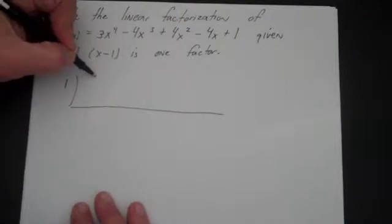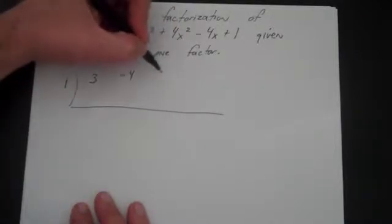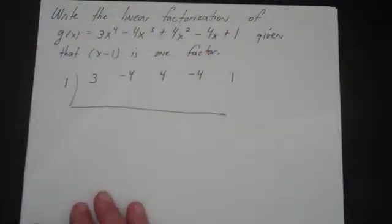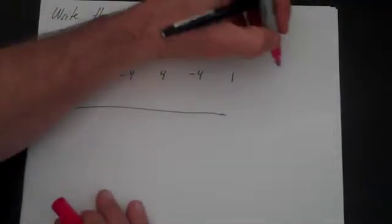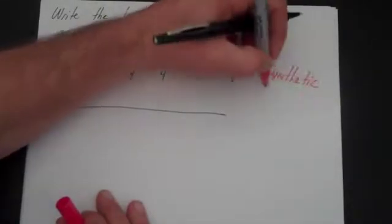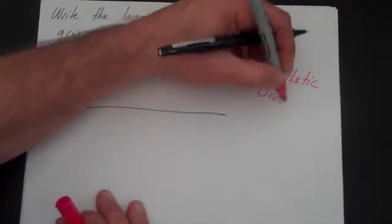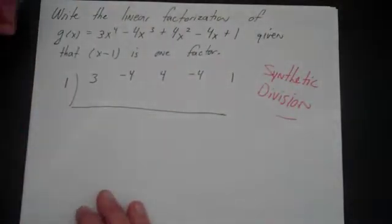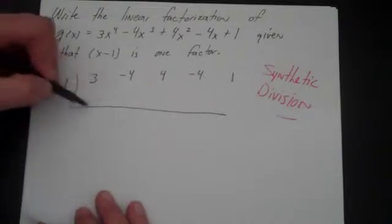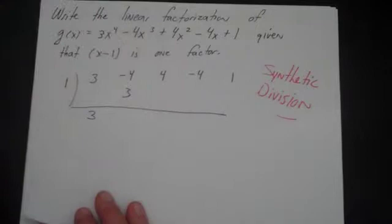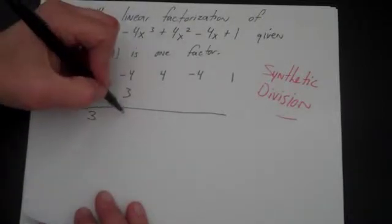So that's going to be a 3, minus 4, 4, minus 4, and 1. If you need to review synthetic division, there's a video called, appropriately enough, synthetic division — it does a couple of examples. Let's go and do this: you take this 3 and write it there, then multiply — 1 times 3 is 3. Then add those two numbers: minus 4 and 3 added together is going to be minus 1.